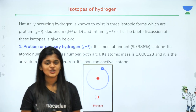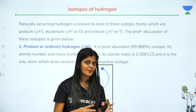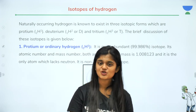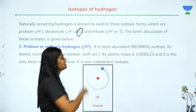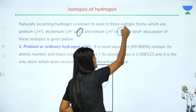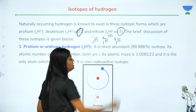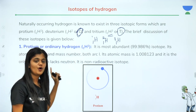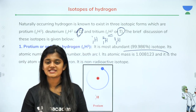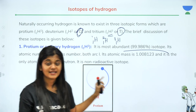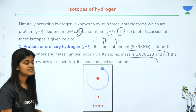Next, a very important topic: isotopes of hydrogen. Isotopes have the same atomic number but different mass numbers. Hydrogen has three isotopes: Protium (¹H¹), Deuterium (¹H² or D), and Tritium (¹H³ or T). Protium is the most abundant isotope — about 99.986% — with atomic mass 1.008123. Importantly, it is the only atom that lacks a neutron entirely.